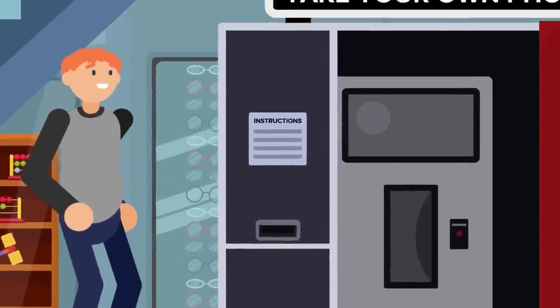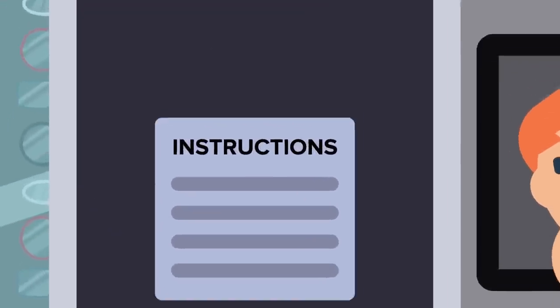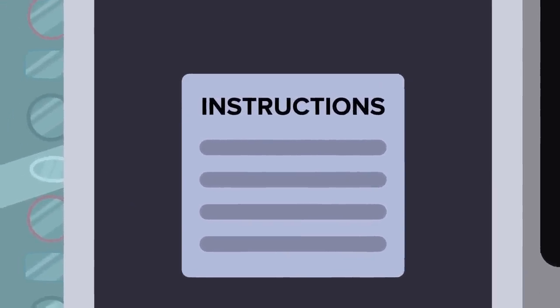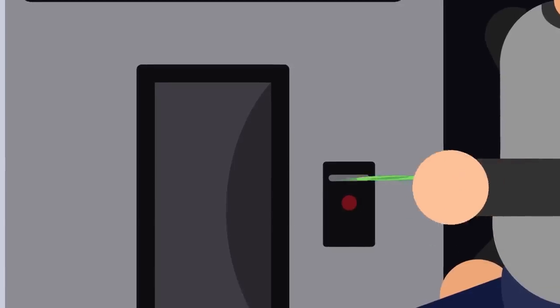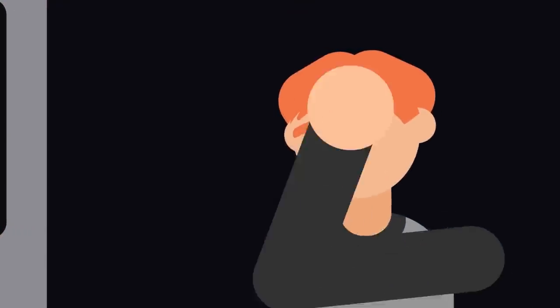Take Your Own Photo boasts the sign on the outside of the cramped cubicle, a list of instructions below describing just how quick and easy the process is. You take a look at the price list, feed the right amount of money into the slot, and take a seat inside. Pulling the curtain closed, you straighten your back, look directly into the lens, a short countdown appears on the screen. Three, two, one.